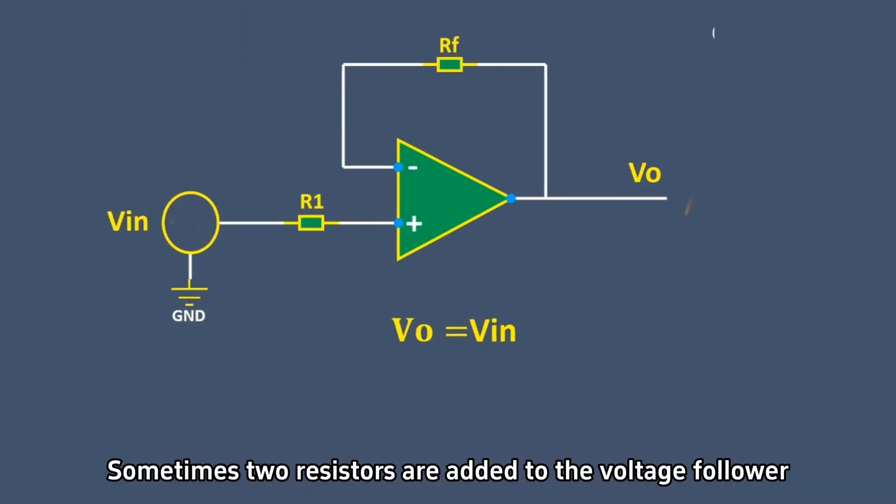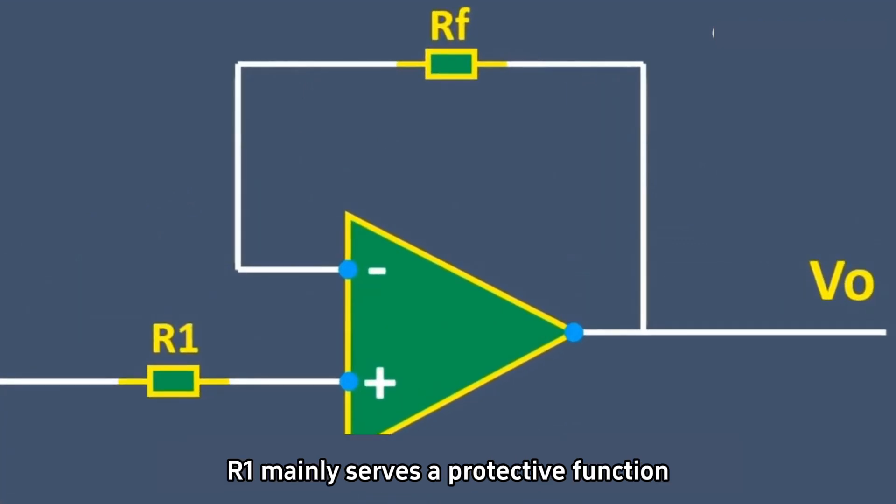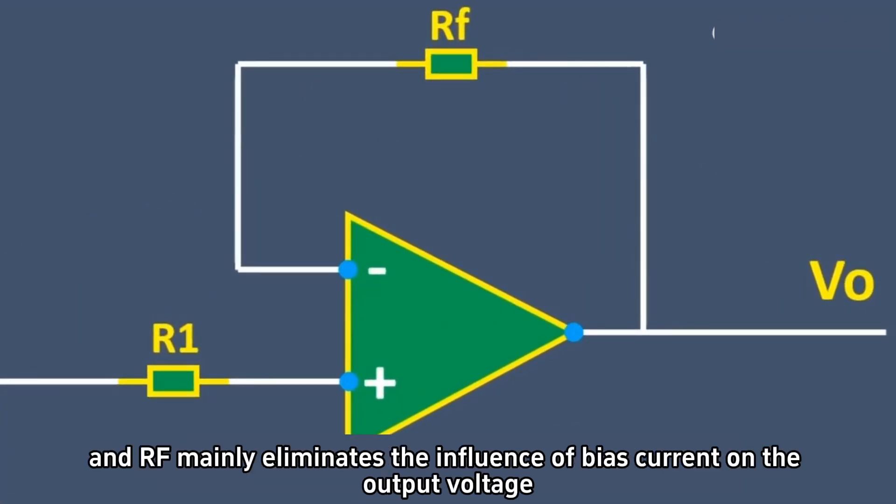Sometimes two resistors are added to the voltage follower. R1 mainly serves a protective function, and RF mainly eliminates the influence of bias current on the output voltage.